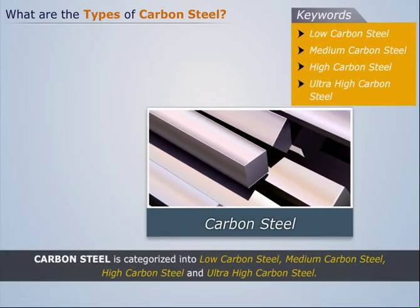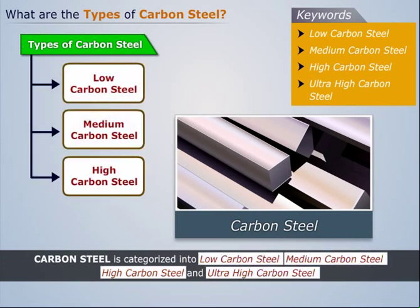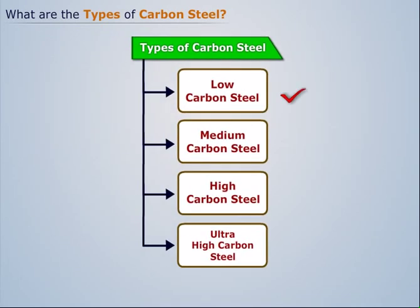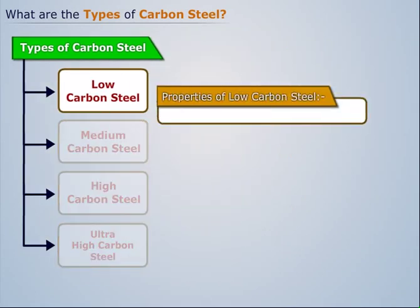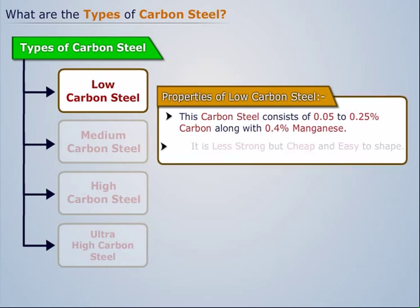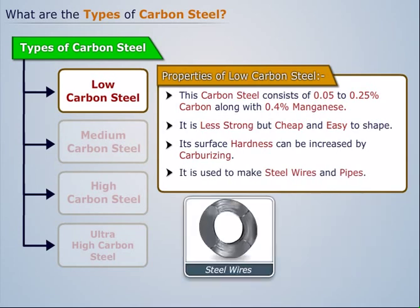Carbon steel is categorized into low carbon steel, medium carbon steel, high carbon steel, and ultra high carbon steel. Low carbon steel consists of 0.05 to 0.25% carbon along with 0.4% manganese. It is less strong but cheap and easy to shape. Its surface hardness can be increased by carburizing. It is used to make steel wires and pipes.